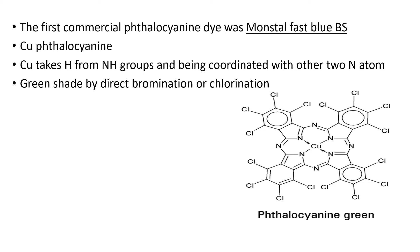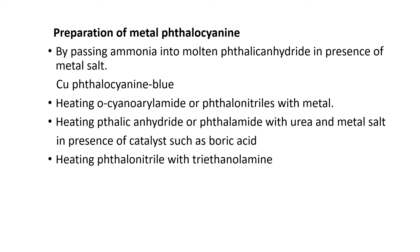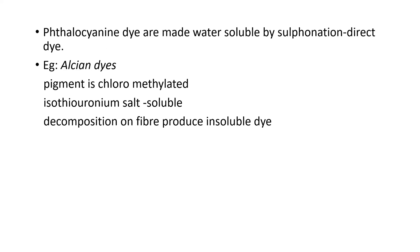Almost every metal ion is capable of being accommodated within the phthalocyanine cavity. It is also deeply colored. Preparation methods include: passing ammonia into molten phthalic anhydride in the presence of metal salts; heating ortho-cyanobenzamide or phthalonitriles with metal; heating phthalic anhydride or phthalamide with urea and metal salts in the presence of catalysts such as boric acid; and heating phthalonitriles with a metal. Copper phthalocyanine is formed by these methods.